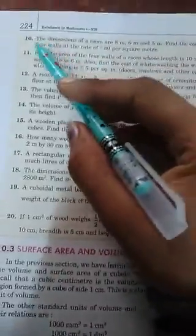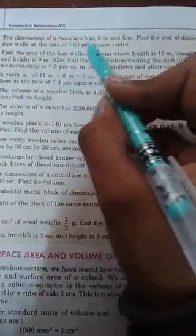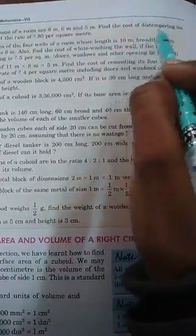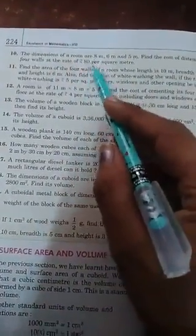Question number 10. The dimensions of a room are 8 meter, 6 meter and 5 meter. Find the cost of distamping its 4 walls at the rate of rupees 80 per square meter. Now we have to find cost of 4 walls.